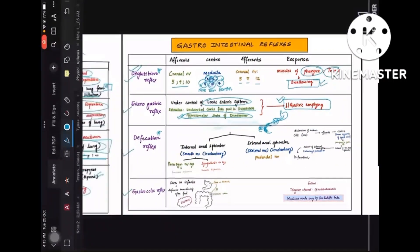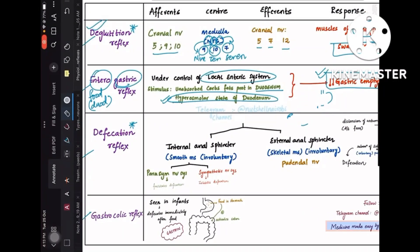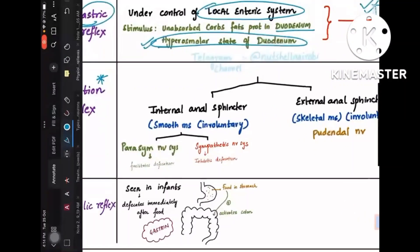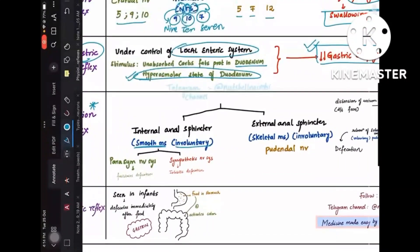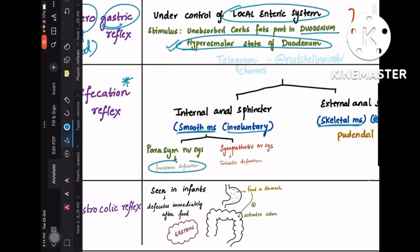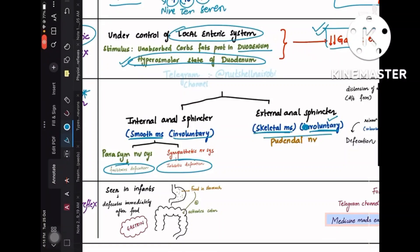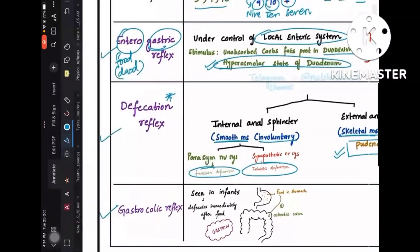In the defecation reflex, there is an internal anal sphincter (smooth muscle — involuntary) and external anal sphincter (skeletal muscle — voluntary). The parasympathetic nervous system facilitates defecation while the sympathetic nervous system inhibits it. The external anal sphincter is under the voluntary control of the pudendal nerve.